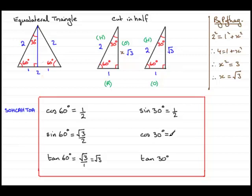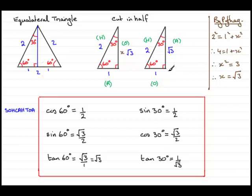So sine of 30 degrees is opposite over hypotenuse: 1 over 2, a half. Cosine of 30 degrees compares adjacent over hypotenuse — the adjacent side to 30 degrees is root 3, giving root 3 over 2. Tan of 30 degrees is opposite over adjacent: 1 over root 3. I'd encourage you to learn the triangle rather than memorise these numbers — it's far easier to just read off the sides.